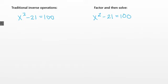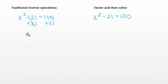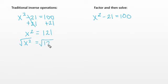Let's look at another example. Using inverse operations, we add 21 to both sides to combine like terms, leaving x squared equals 121. Taking the square root of both sides, the square root of x squared is x and the square root of 121 is 11, so x equals positive or negative 11.